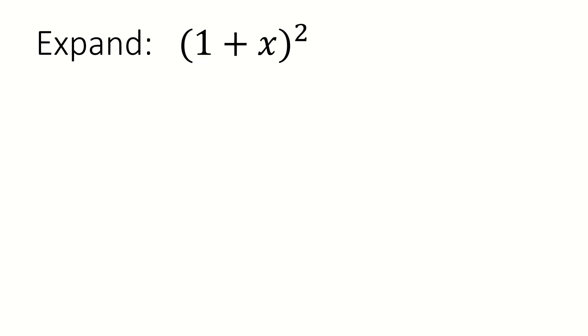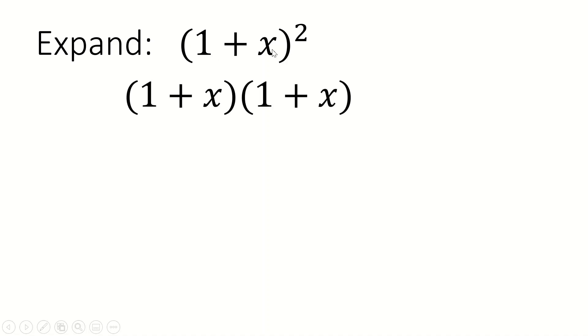The last video was the first in this binomial expansion series, but this video will be the first where we actually do some binomial expansion. Let's start with this. This is binomial expansion because a binomial means two numbers — here, 1 and x — and you expand them via this power, because this is actually 1 plus x times itself times 1 plus x, and then we expand. So this is binomial expansion.